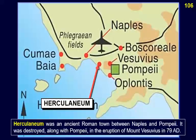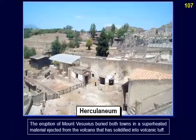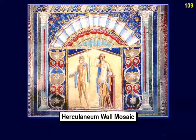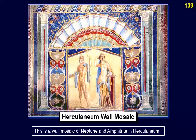Herculaneum was an ancient Roman town between Naples and Pompeii, destroyed along with Pompeii in the eruption of Mount Vesuvius in 79 AD. The eruption buried both towns in superheated material ejected from the volcano that has solidified into volcanic tuff. 150 skeletons were found near the beach, many of which showed evidence of lead poisoning from lead that seeped into the syrup of cheap wine stored in lead containers. This is a wall mosaic of Neptune and Amphitrite in Herculaneum.